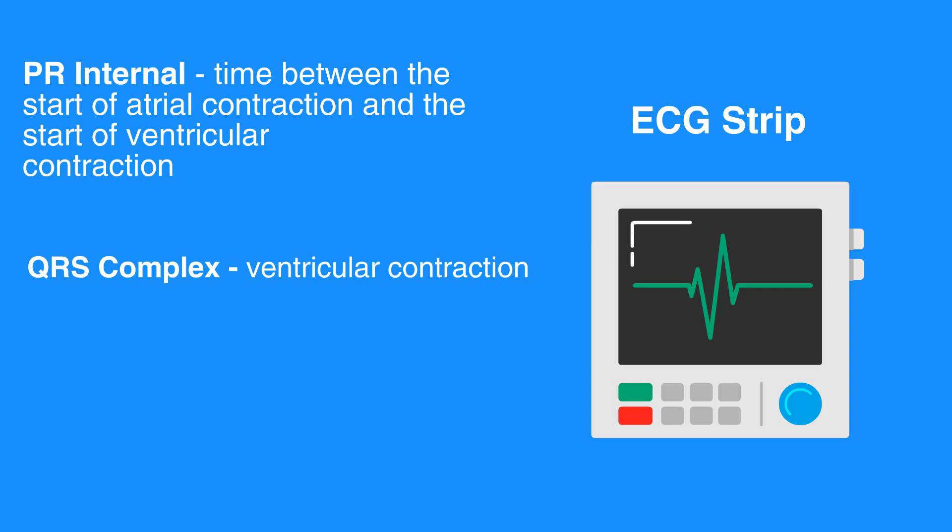Following ventricular contraction, the ventricles rest and repolarize, which registers as the T wave. The atria also repolarize, but this coincides with the QRS complex. Therefore, it cannot be observed on the ECG strip.